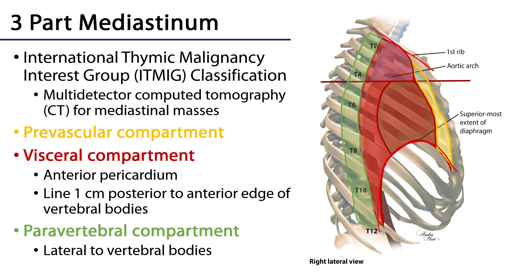The first compartment is the prevascular compartment. Its boundary is the anterior aspect of the pericardium, continued all the way up to the first rib. Everything anterior to that is the prevascular compartment, which may contain structures such as the thymus gland.